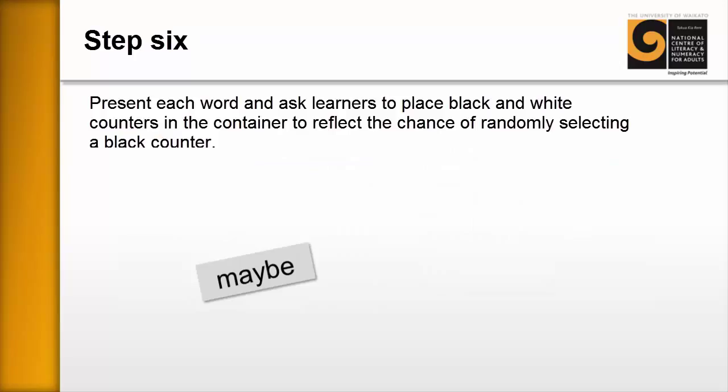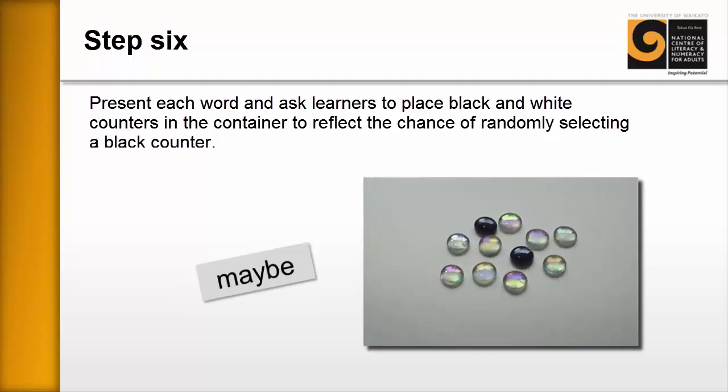Step six. Now, after we've put the words into a continuum and discussed them on the board, select one word and ask your learners to arrange the counters in their container to reflect that word. For example, if the word is maybe, have them put black and white counters into a container to represent the chance maybe of pulling out a black counter.